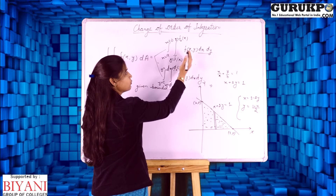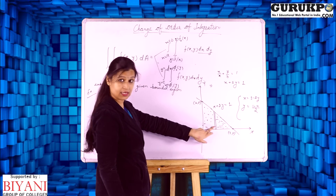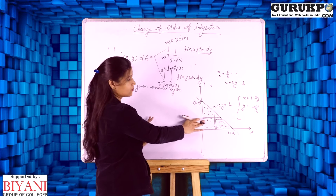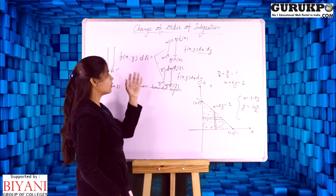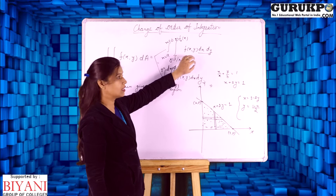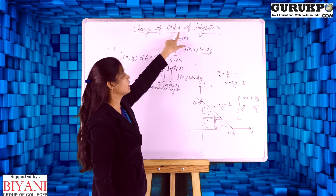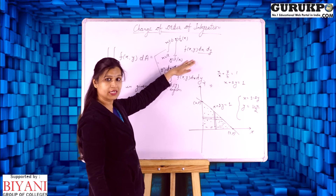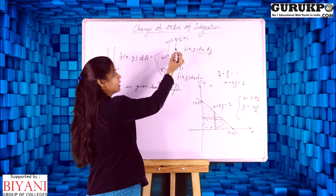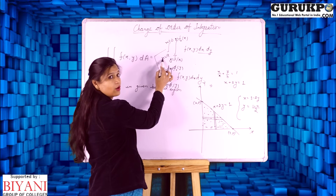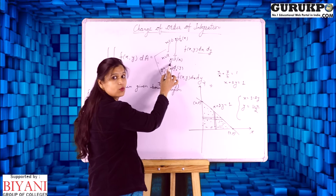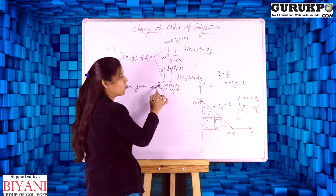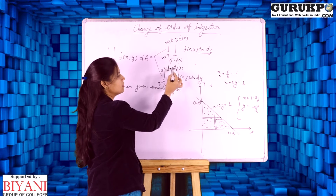In the first method we take a vertical strip, and in the second method we take a horizontal strip. Sometimes it is very difficult to solve double integration in the given manner, and change of order of integration is very helpful in that situation. By changing the order of integration, we change the order of limits — the first integration switches between x and y.